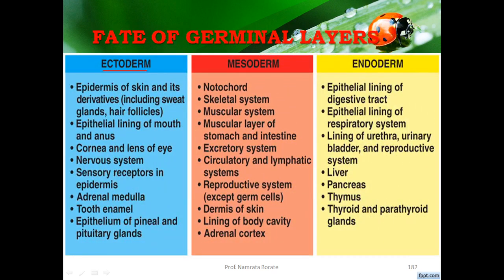The first one is the ectoderm. The ectoderm gives rise to the epidermis of the skin, nails, sweat glands, salivary glands, mammary glands, lacrimal glands, and sebaceous glands. It also gives rise to the cornea and lens of the eyes, retina, conjunctiva, nasal epithelium, enamel of teeth, internal and external ear, foregut, hindgut, adrenal medulla, anterior and posterior pituitary gland, pineal gland, and the entire nervous system.